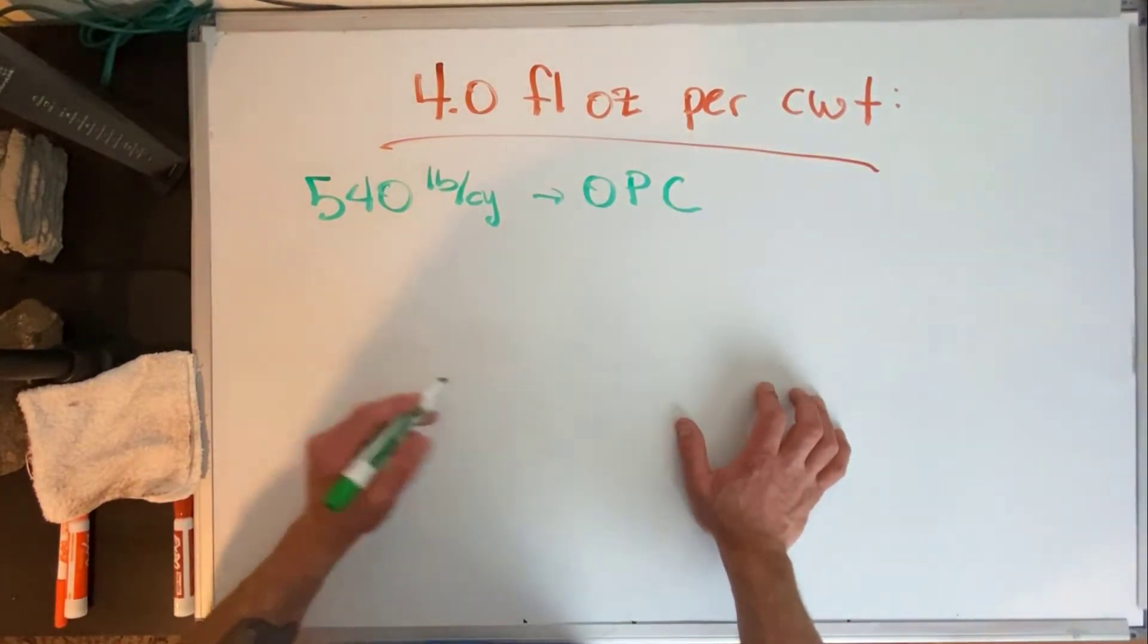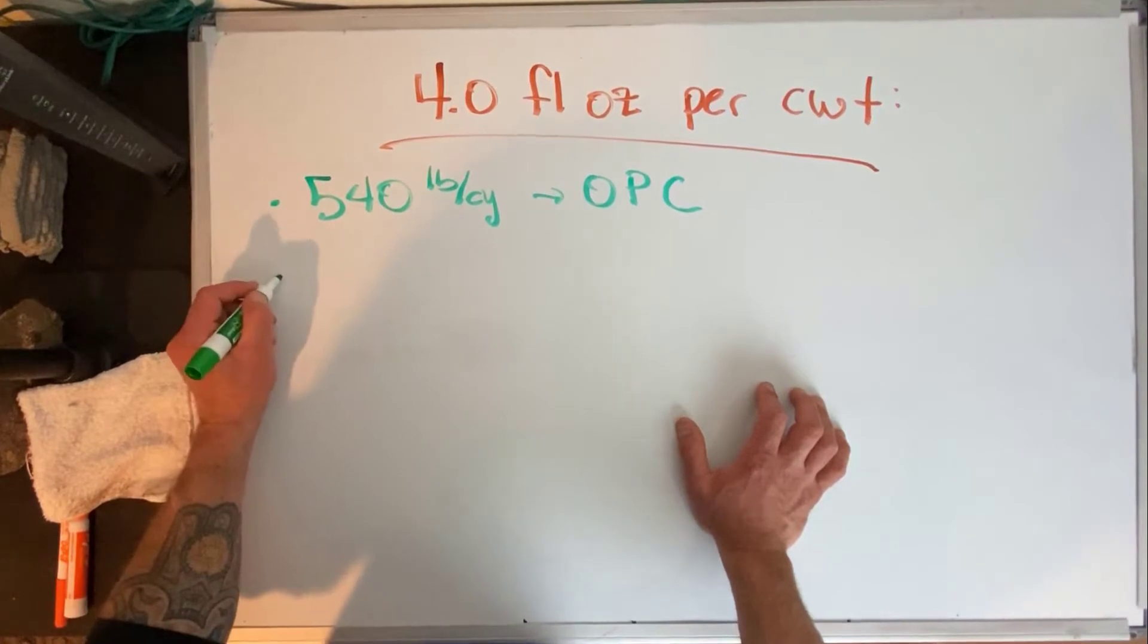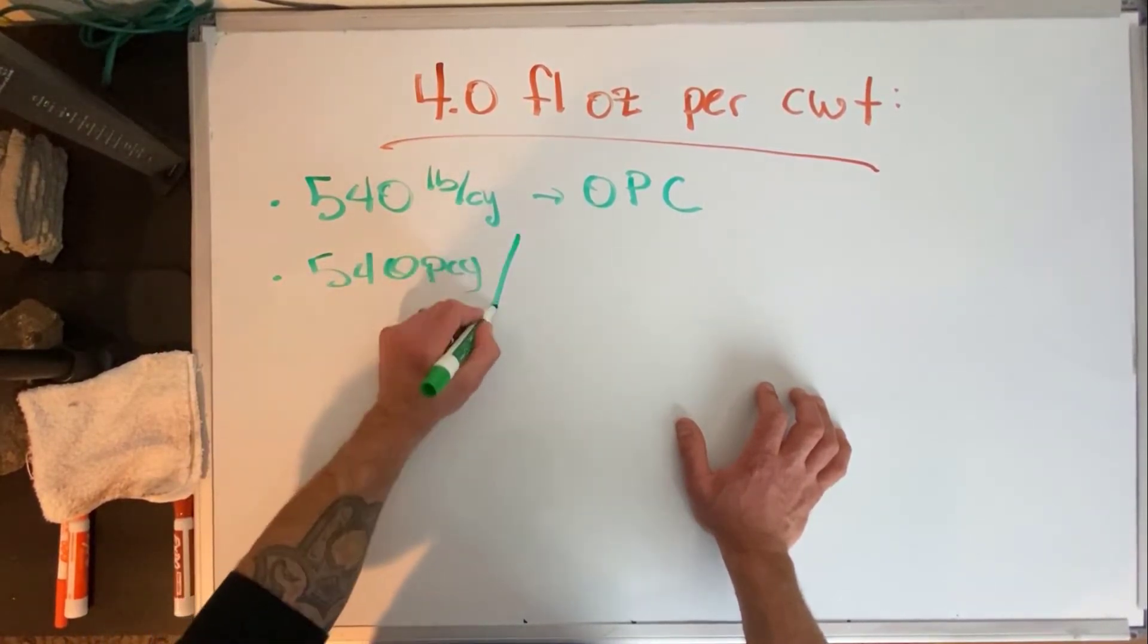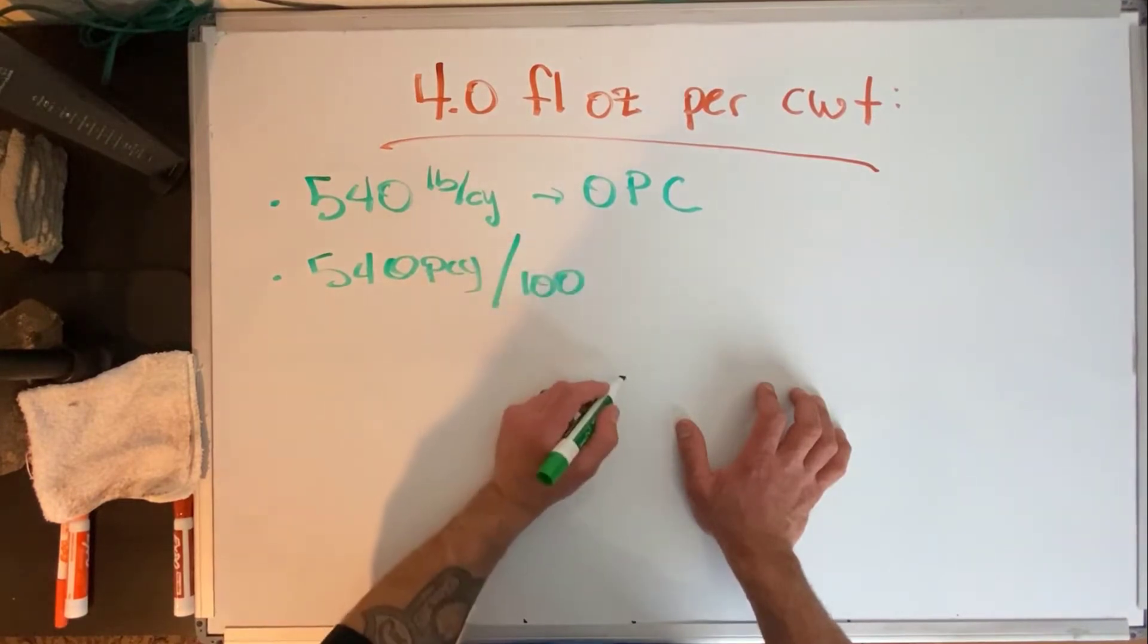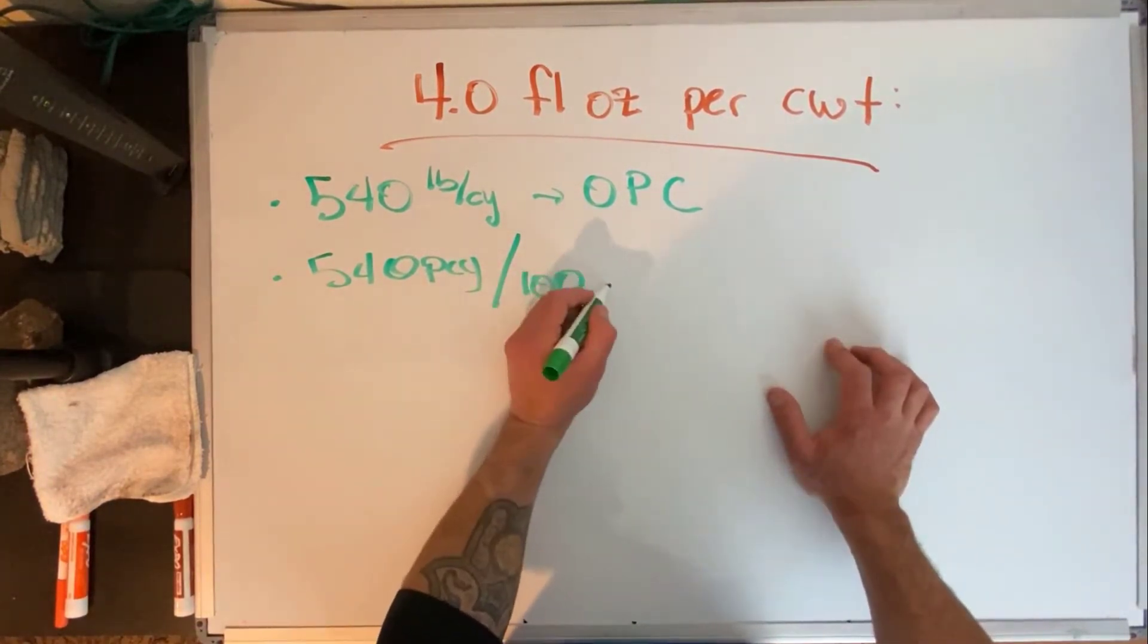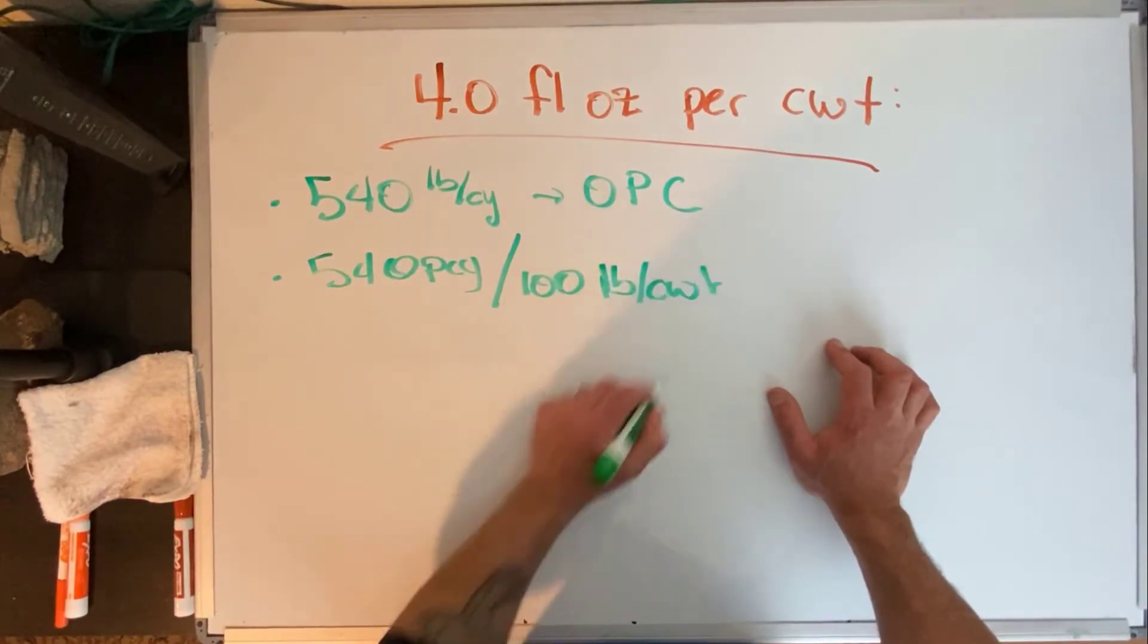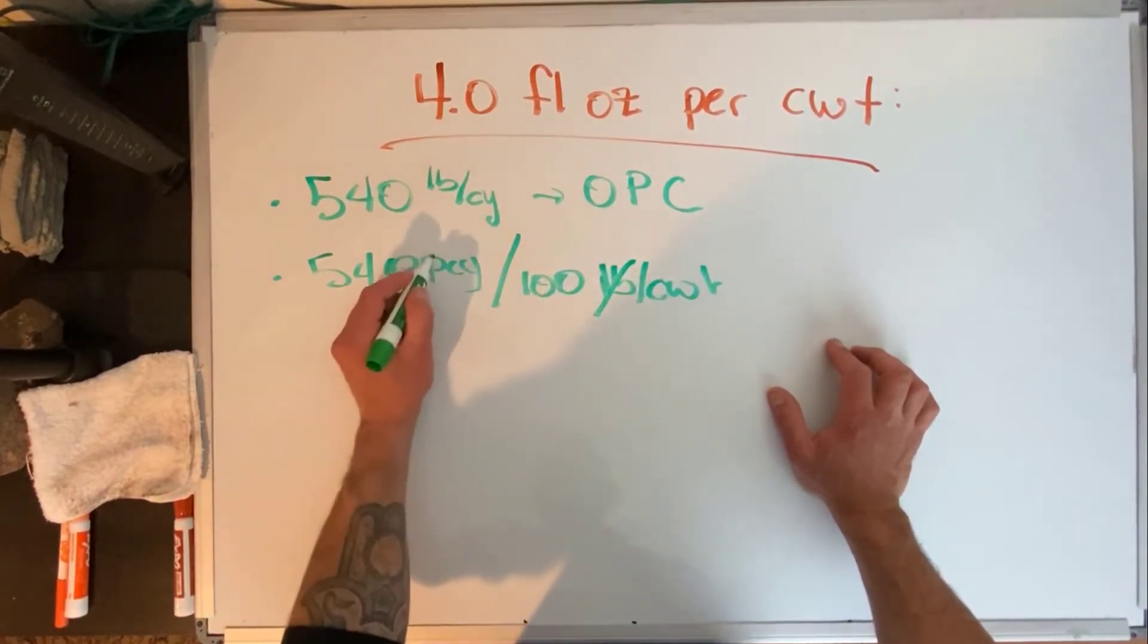We've got to take our 540 pounds per cubic yard and we got to divide it by 100 pounds per hundred weight. And in doing so we cancel out our pounds and we're left with 5.4 cement hundred weights per cubic yard.